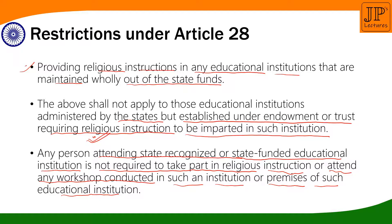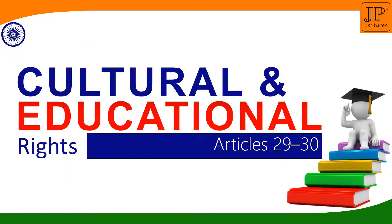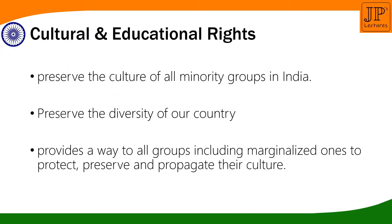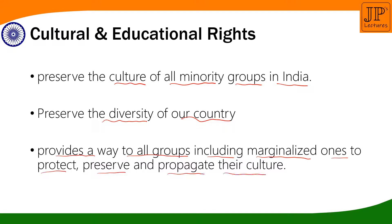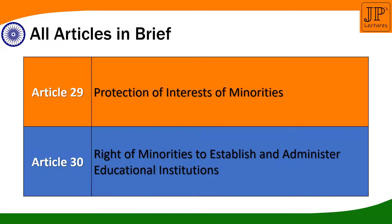Now let us go to articles 29 and 30, which come under cultural and educational rights. These rights basically preserve the culture of all minority groups in India — though it is not necessary that only minorities benefit. If you have a special culture that represents your community, you are allowed to preserve it, as this represents the diversity of our country. The constitution guarantees these rights so that diversity is preserved and all groups, including marginalized ones, can protect, preserve, and propagate their culture. There are two articles: article 29 and article 30.